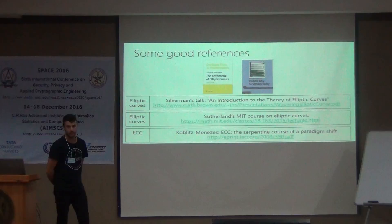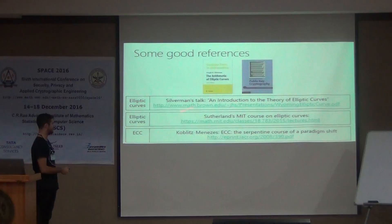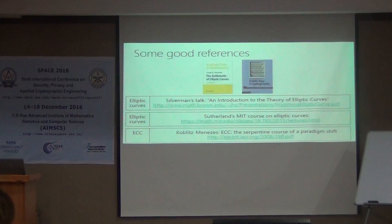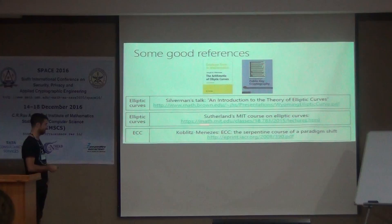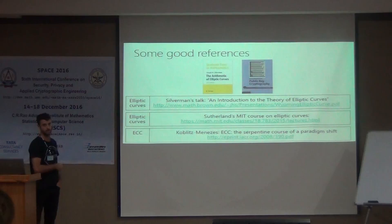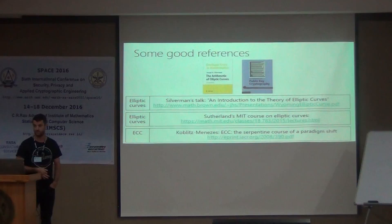Before going further, here are some good references. The Elliptic Curve Bible is the book by Silverman. There's also a more recent book on the mathematics of public key cryptography by Galbraith. For a more condensed view of elliptic curve theory, Silverman's talk is very good. Sutherland's MIT course on elliptic curves is more comprehensive and gives a good overview of the theory behind elliptic curves. And for a read on the history of ECC and the technical details of curve cryptography, the survey paper by Koblas and Nasus from 2008 is very good as well.